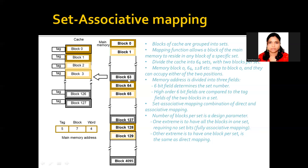For example, block number 127 maps to set number 127. In that set there are two blocks available, so we can fill either one. This overcomes the drawback of direct mapping. Next time, if we again get set number 127, the other block in that set is still free — so we can store it there without replacement. In this way, there is no need to replace every time. For k times we have free space available within the set. Only after the k limit is exceeded do we go for replacement. Thank you.